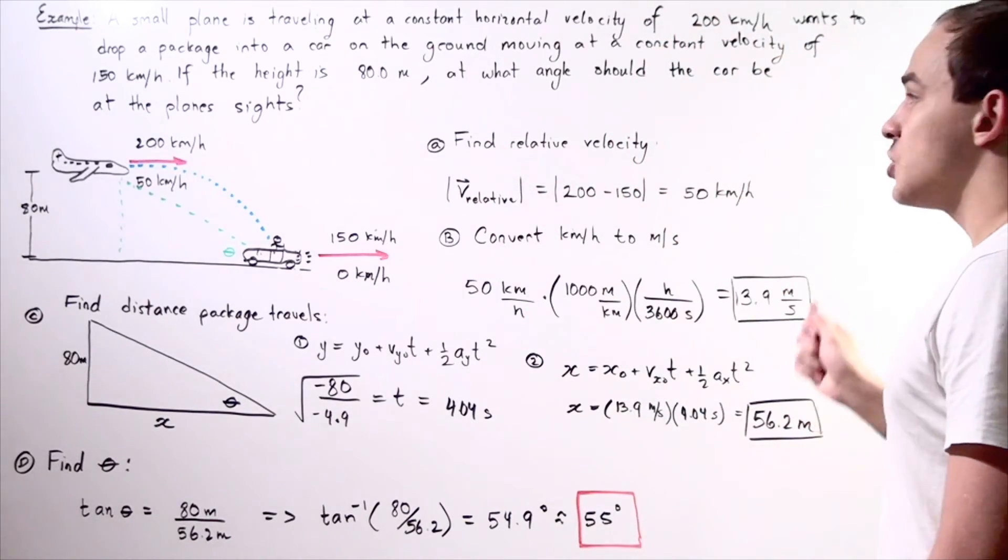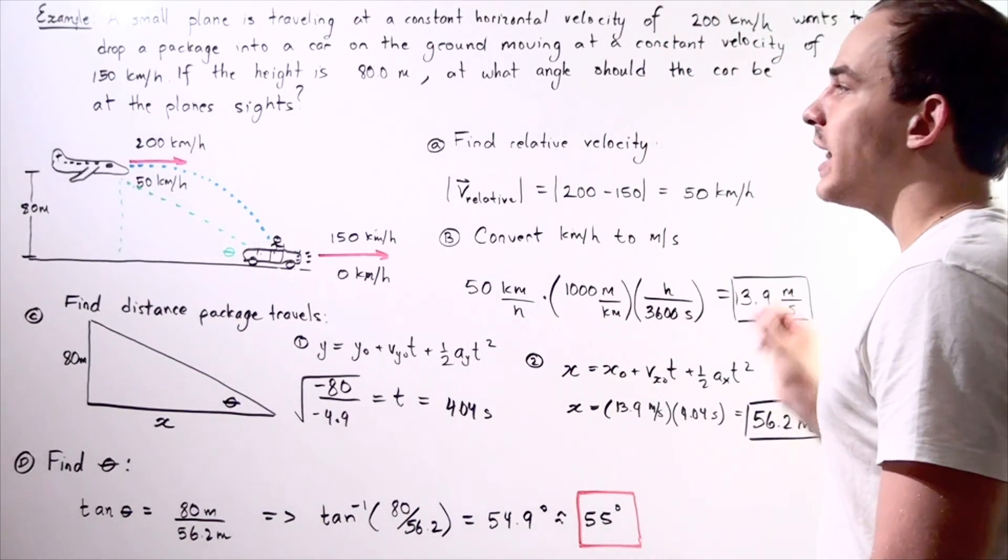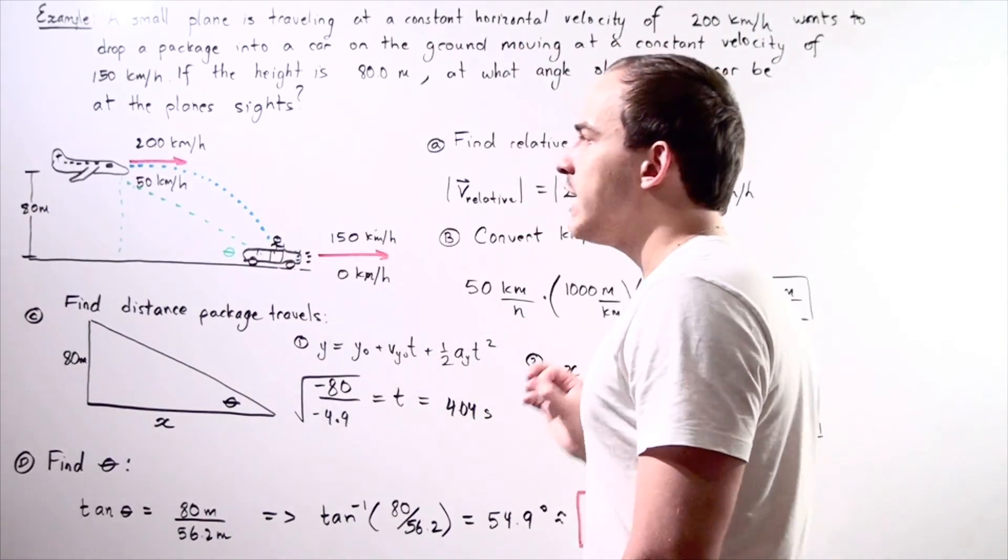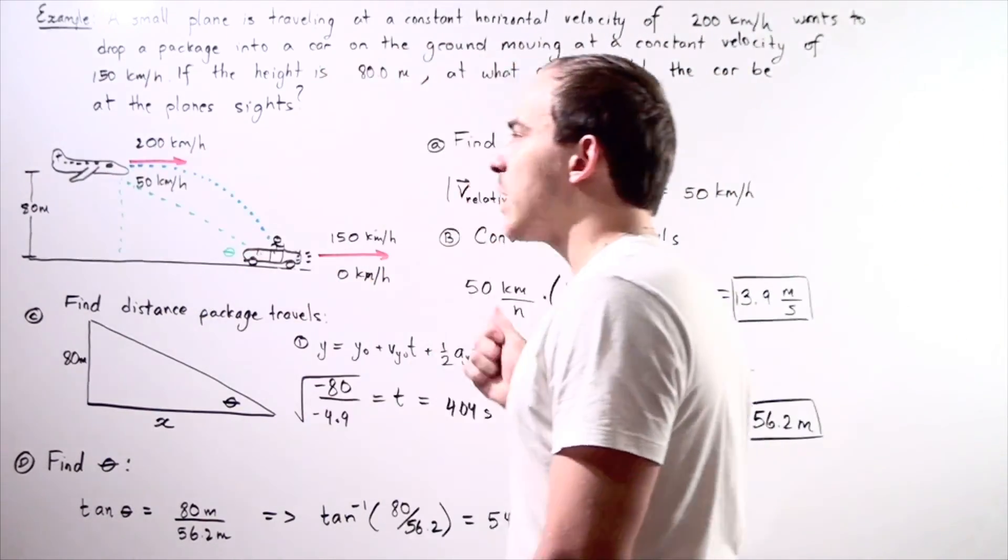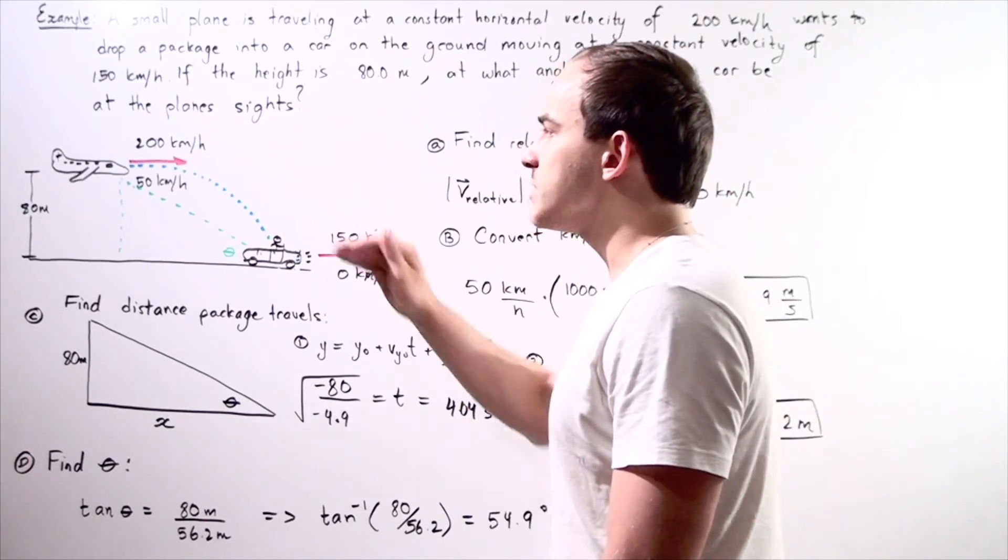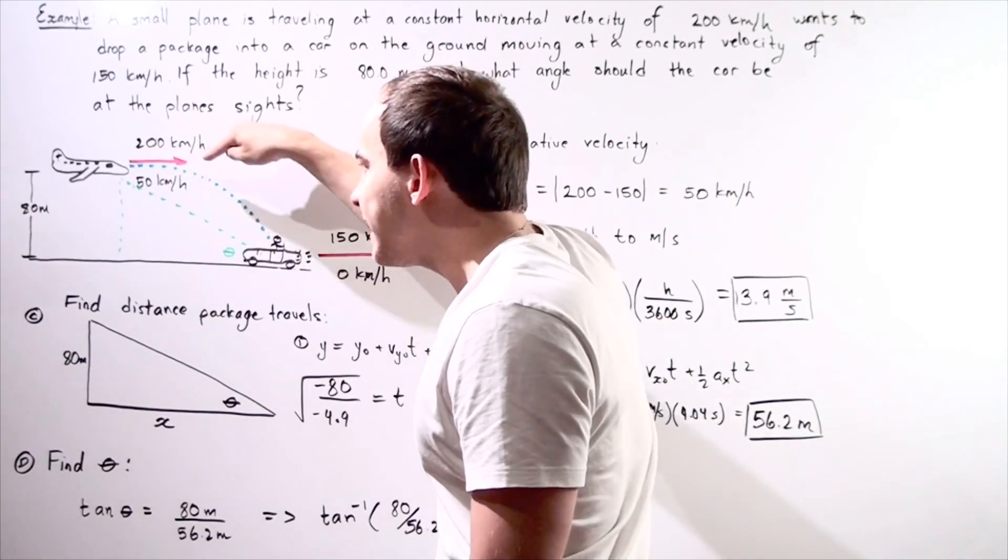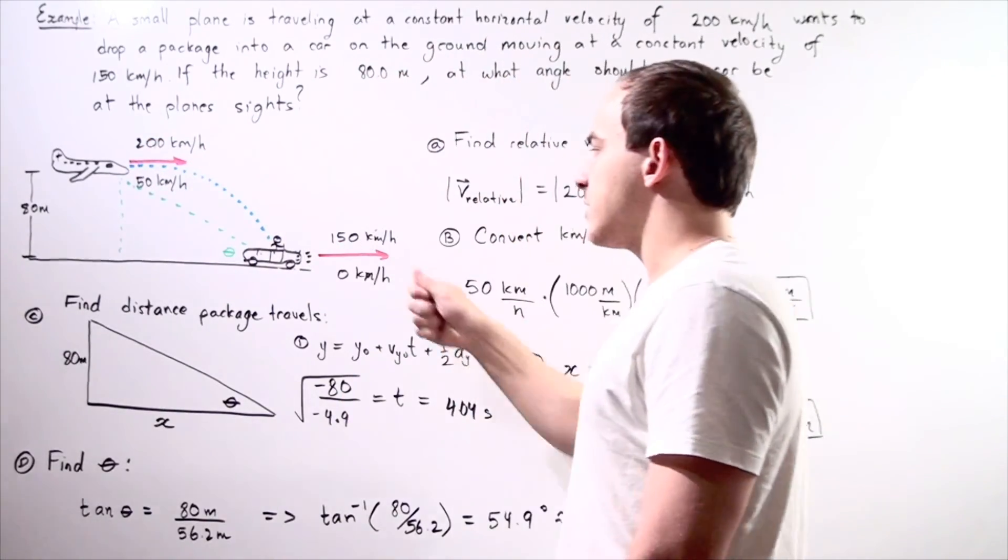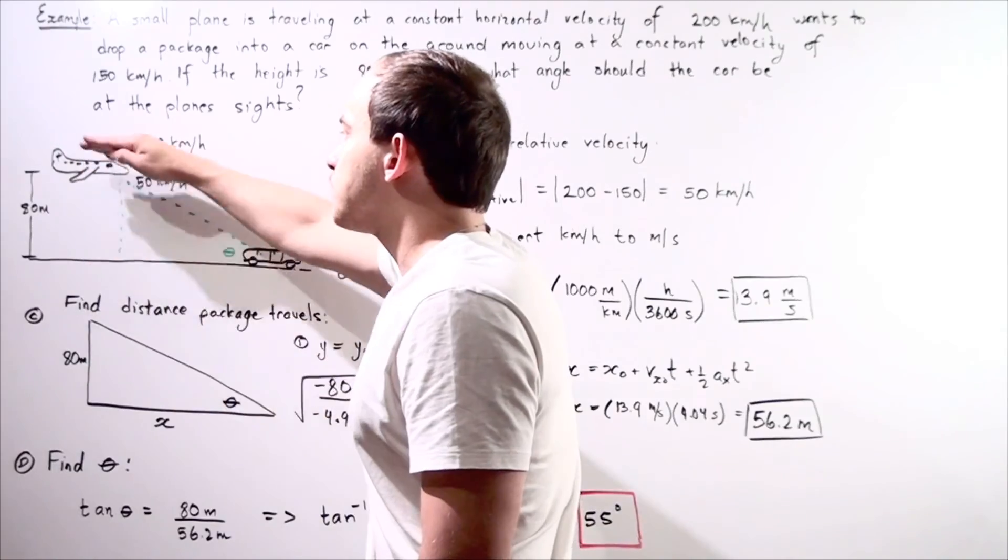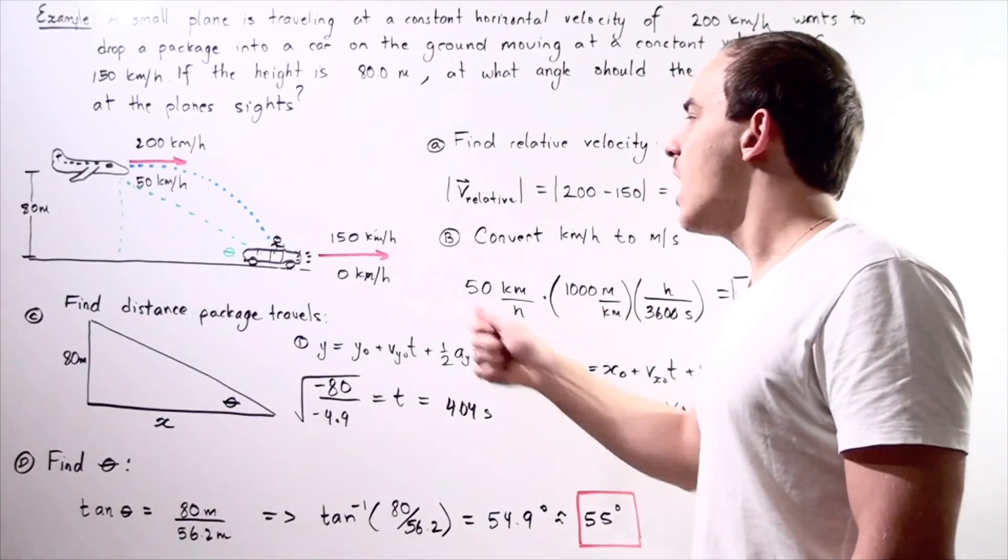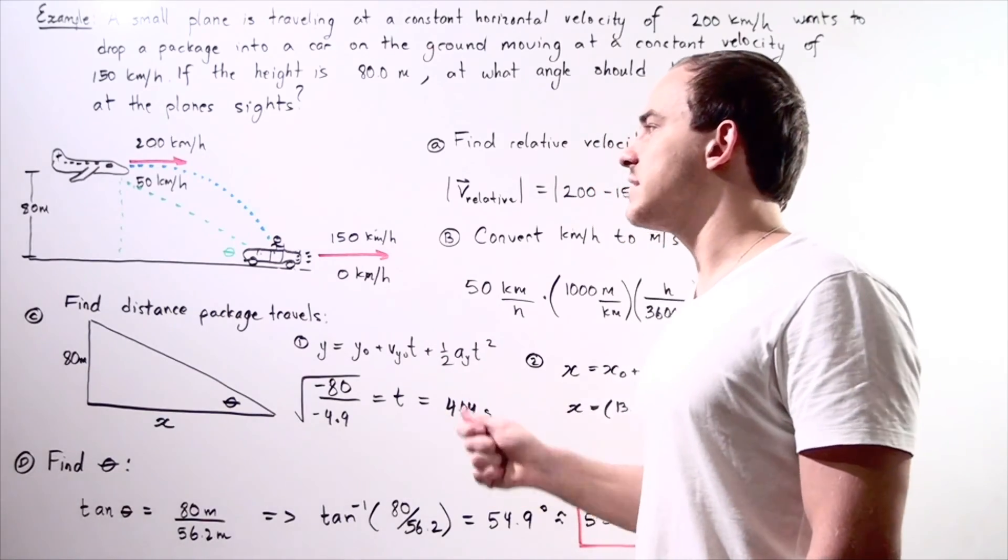at what angle should the car be at the plane's sights? So let's look at our diagram. We have our small plane that's traveling at a constant horizontal velocity of 200 kilometers an hour drops off a package into a car that is traveling 80 meters below the plane at a constant horizontal velocity of 150 kilometers an hour.